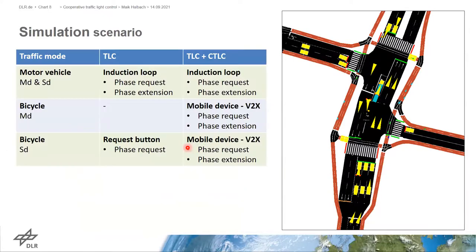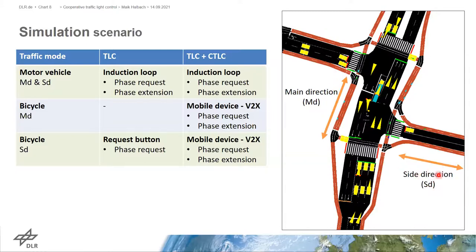In the blue table, you can see the detection implementation for the two different scenarios, subclassified into main direction and side direction, and related to traffic mode — motorized traffic and bicycles. In the second scenario with the cooperative traffic light control model integration, the bicycles are considered equally to the motorized traffic in the control.